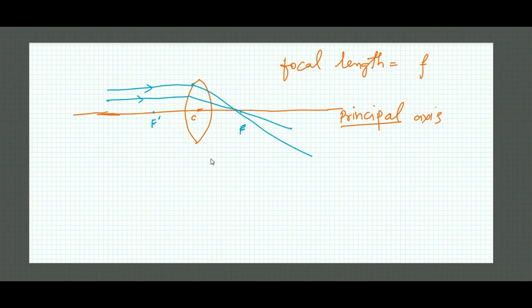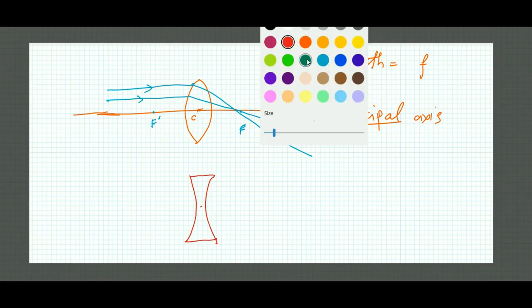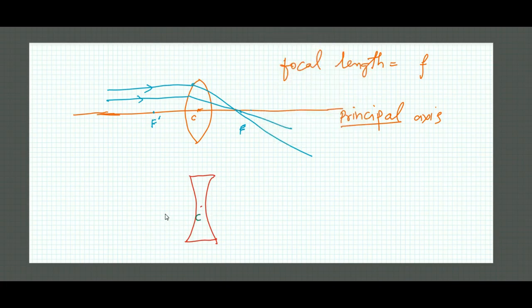Now similarly for the concave mirror, it is just like the same. I am drawing here again. This is a concave mirror. It also has an optical center as usual and this is the principal axis.